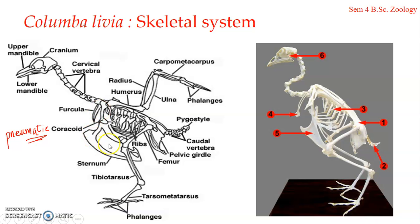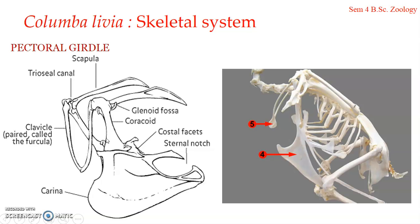What you are supposed to learn is about the girdles — the pectoral and the pelvic girdle. The pectoral girdle is a very stout and strong structure connected with the sternum on either side of the body to support the wings. You can see a V-shaped structure here — this forms the pectoral girdle.